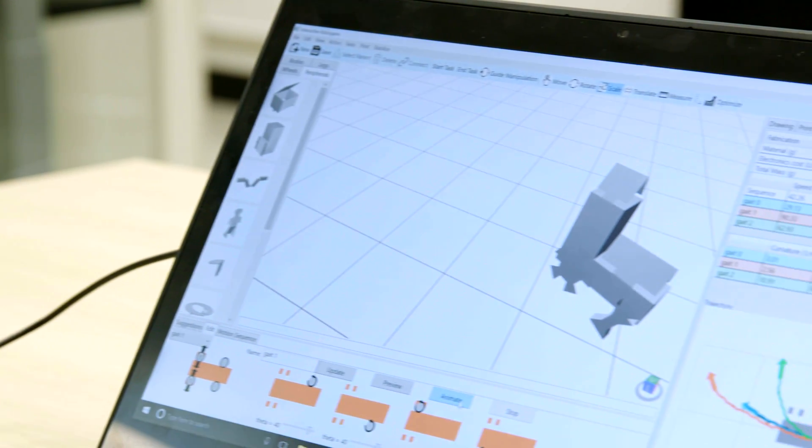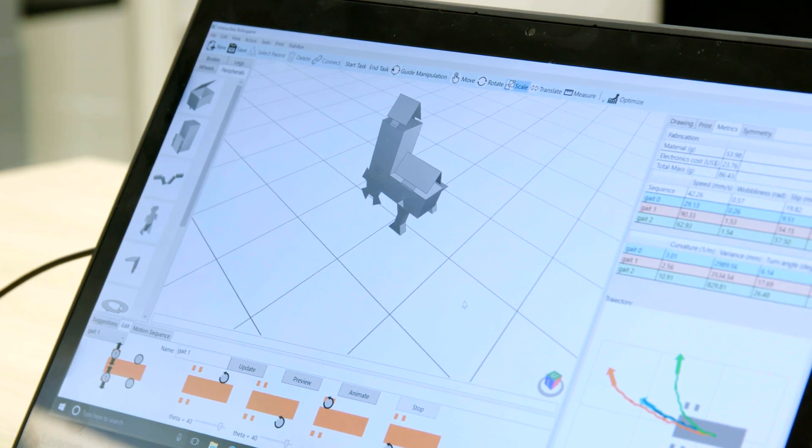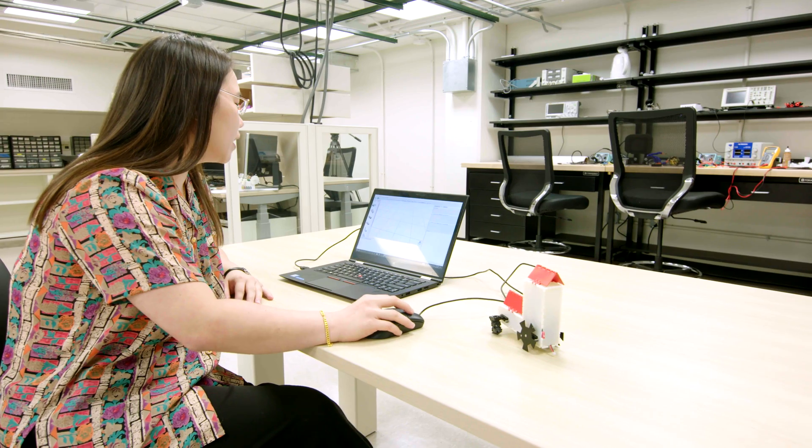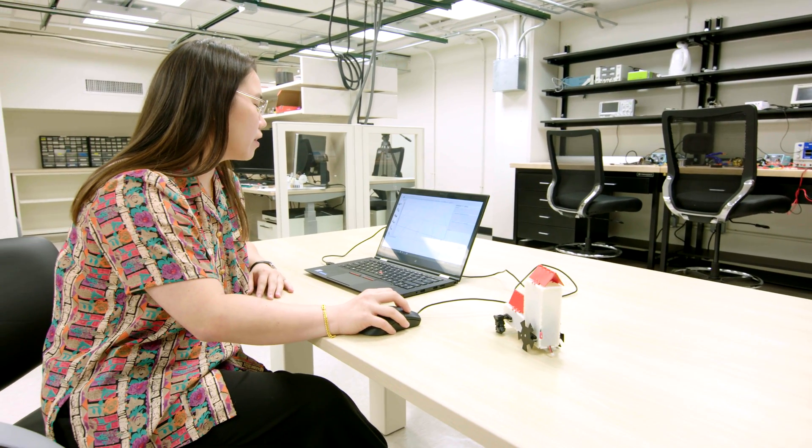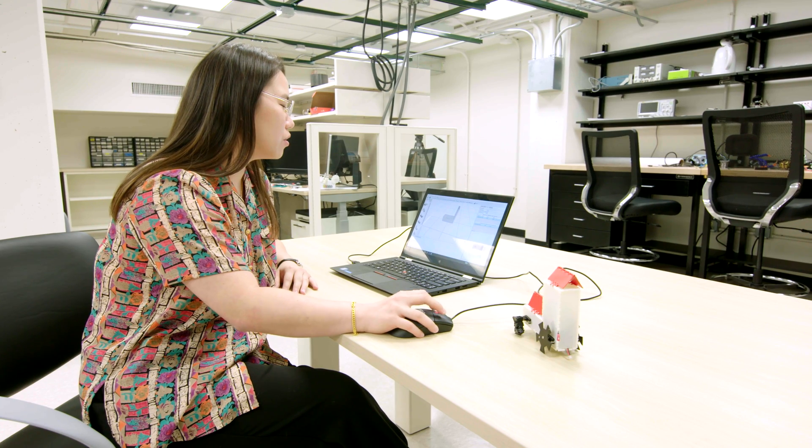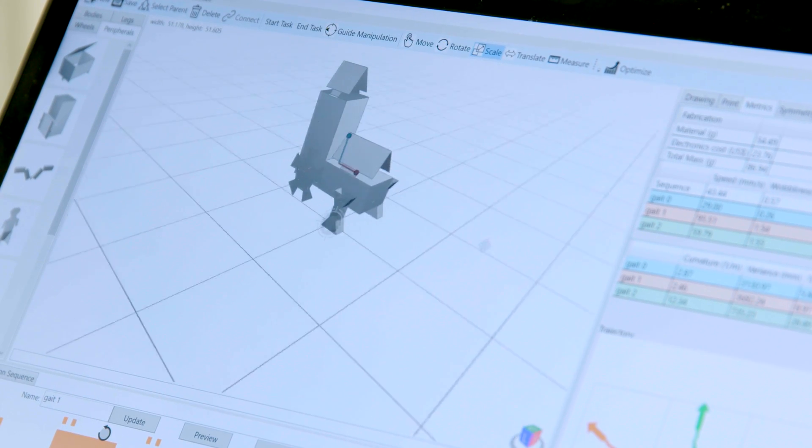This is Interactive Robogami. You can see there's a workspace in the middle where people can design their own robot. There's a database of parts that people can click and drag into the screen to see what the 3D shape will look like.